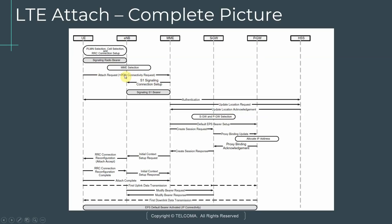Once the MME is identified, the UE sends an Attach Request and a PDN Connectivity Request to the MME. The MME sets up an S1 signaling connection with the eNodeB for that subscriber. After authentication between the UE and the network, the MME sends an Update Location Request to the HSS, which responds with an Update Location Acknowledgement. The HSS then knows which MME the user is registered in and where the UE is located.